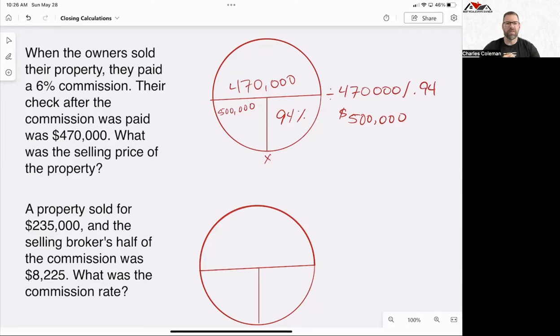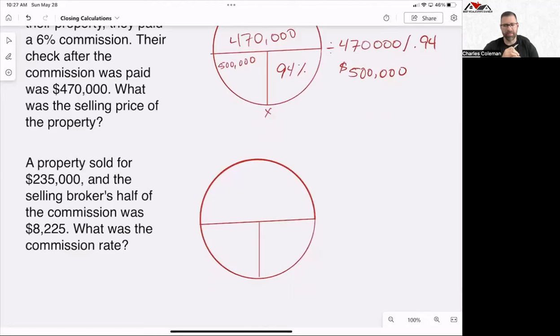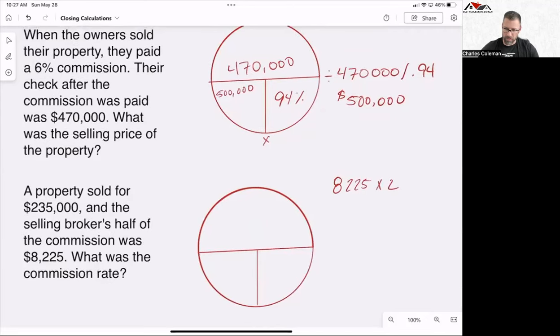The second one that we have is a property sold for $235,000. And the selling broker's half of the commission was $8,225. What was the commission rate? And so if we're looking at this thing, the first thing that we need to do, right, we're going to take 8,225, and we're going to multiply that by two, because you see it's the half. All right. So we're going to go through and we're going to do that.